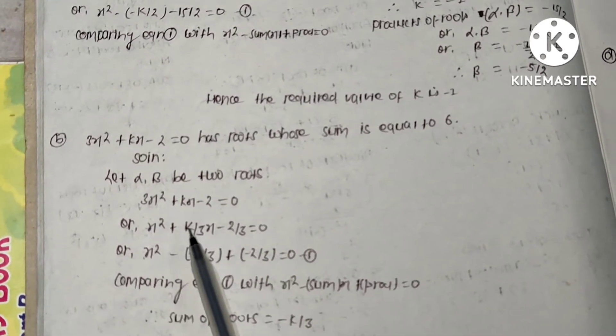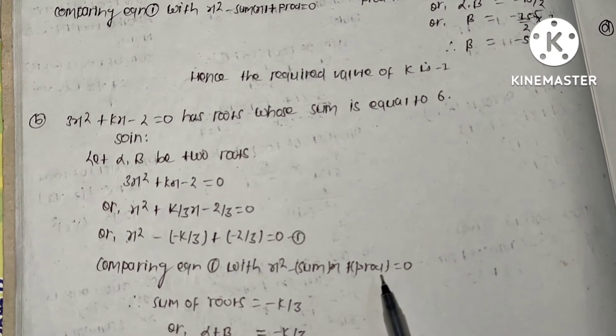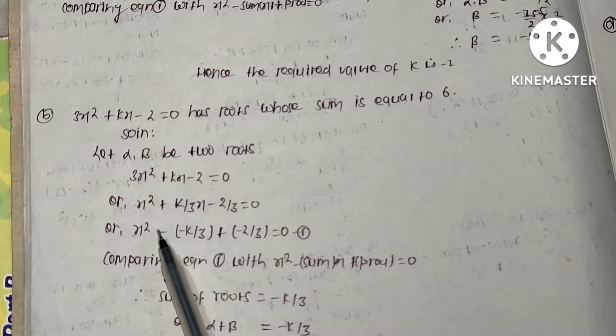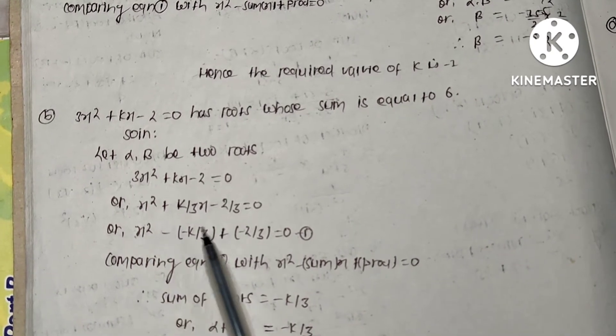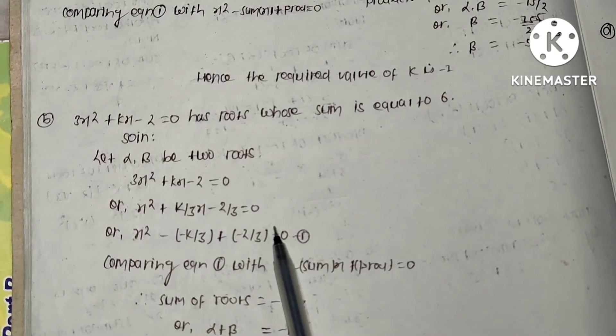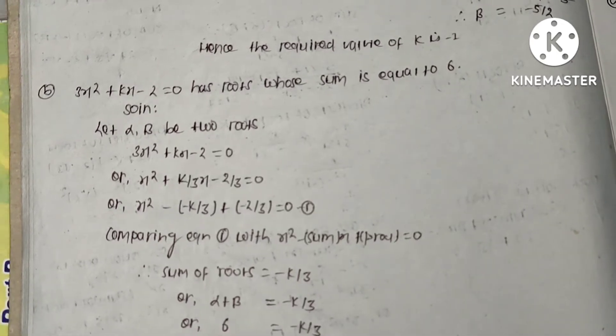Now mention this equation in the form of the formula x² - (sum)x + (product) = 0. I have written this equation in the form of this formula, then compare this equation with x² - (sum)x + (product) = 0.